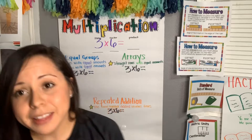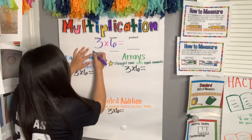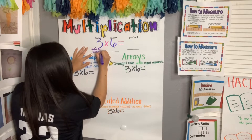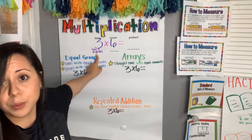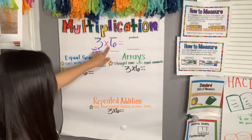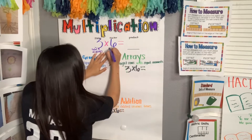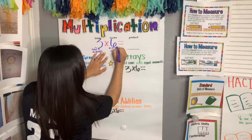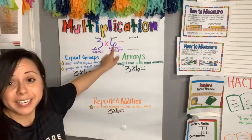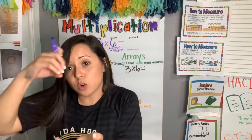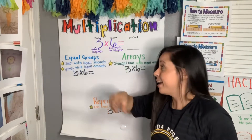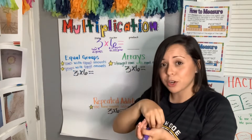Now let's review what each of these numbers represents. The first factor represents the total number of groups. So in this number sentence, we know we are going to have three total groups. The second factor represents the number of objects in each group — the total number of objects or things that are going to be inside each group.